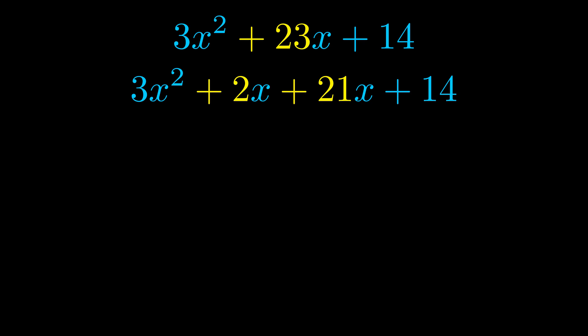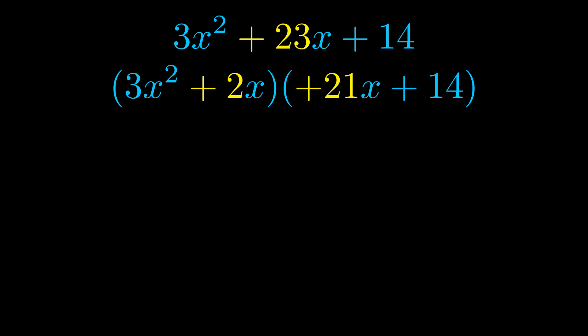Once we've done this we go ahead and we put parentheses around the first term and the last term, and we do that so that we can take the greatest common factor out of both terms. We can see the greatest common factor is now outside in green.